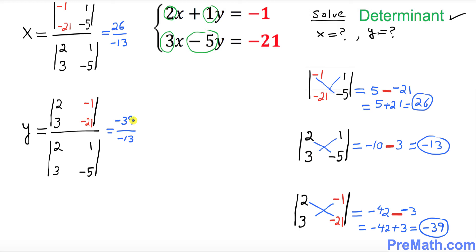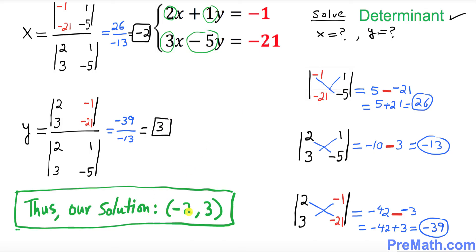So if you simplify or reduce this turns out to be simply negative 2, and this turns out to be y is 3. Thus our solution turns out to be negative 2 comma 3. Negative 2 is your x value and 3 is your y value. Thanks for watching and please subscribe to my channel for more exciting videos.